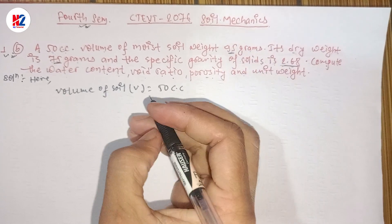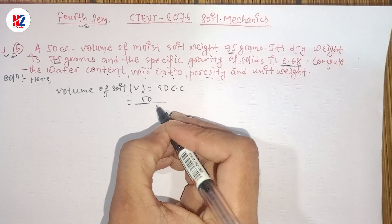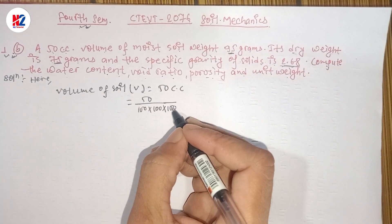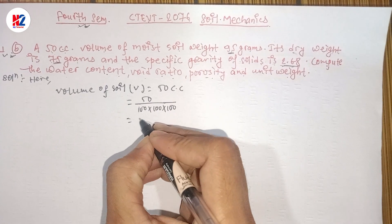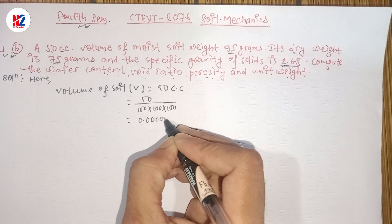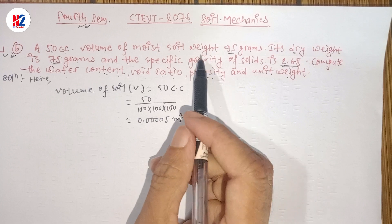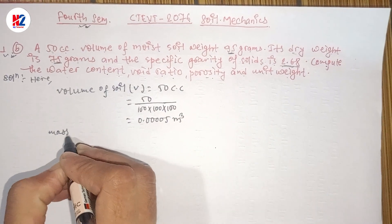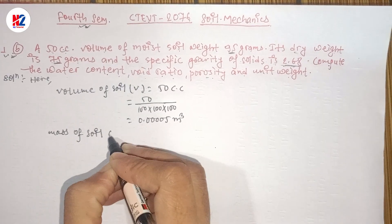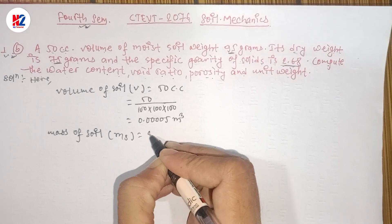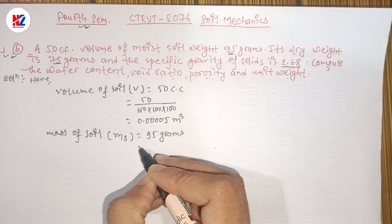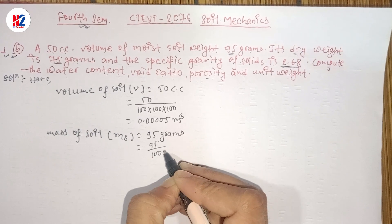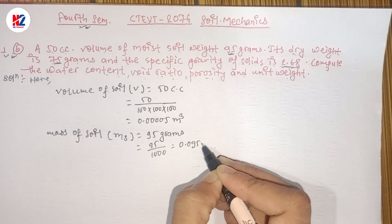Converting units: 50 cc is equal to 0.000050 cubic meters, i.e., 5 × 10⁻⁵ m³. The mass of the field sample (wet mass) is 95 grams. Dividing by 1000, the mass of field sample is 0.095 kg.